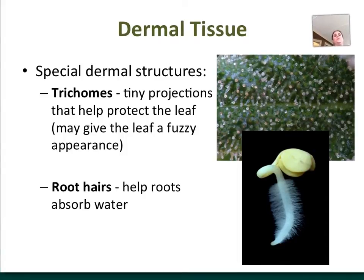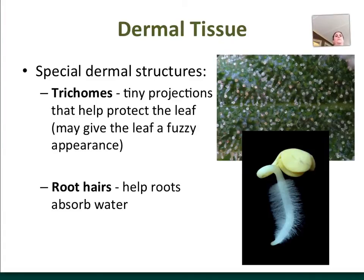So dermal tissues have some special structures on the outside of the plant that help the plant. One of those structures are called trichomes. Trichomes are tiny little projections that protect the leaf. They have chemicals — they can help the plant to capture an insect if it's a carnivorous plant with a sticky substance. A very well-known common drug produces a chemical in these trichomes that people like to smoke.